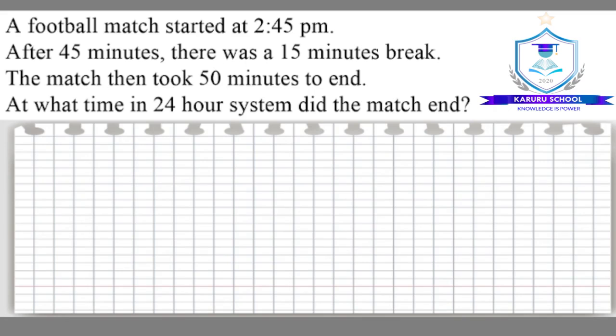Now to tackle this question, we will start by converting 2:45 p.m. to be in the 24 hour system. So we have 2:45 p.m. is equivalent to, we add 12 to 2 to get 14:45 hours. So this gives us our time in 24 hour system.